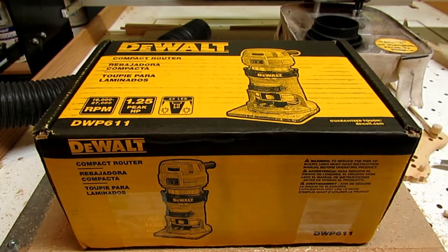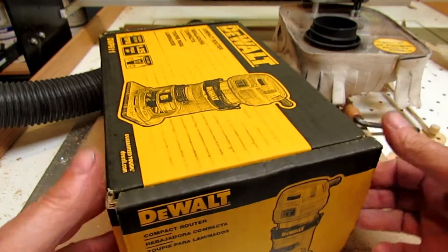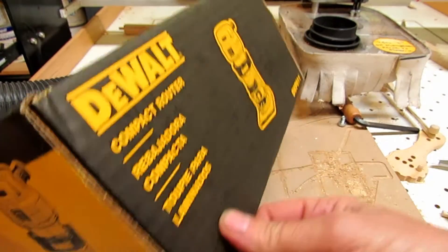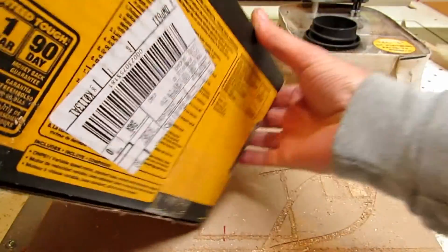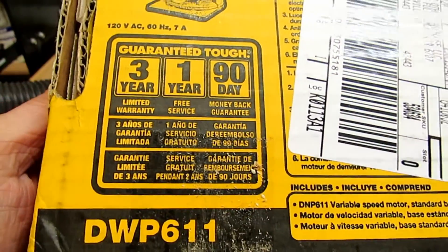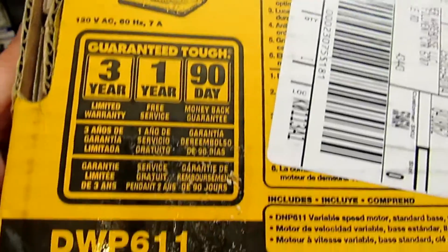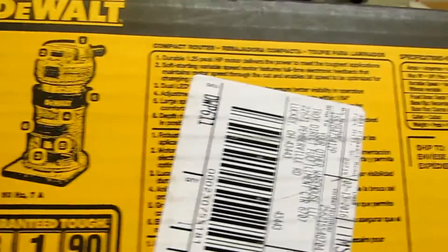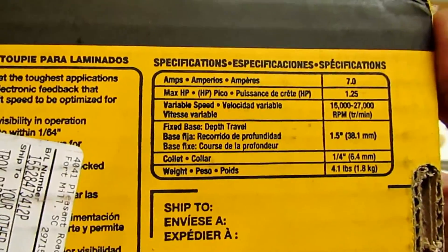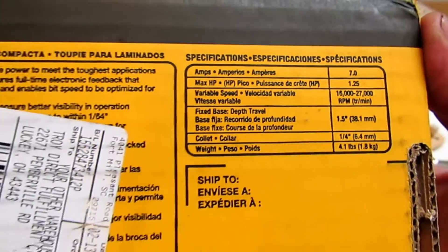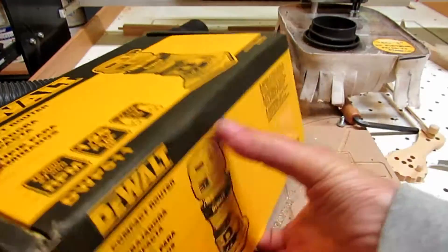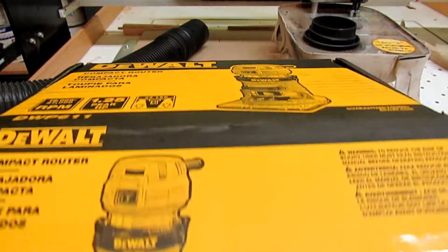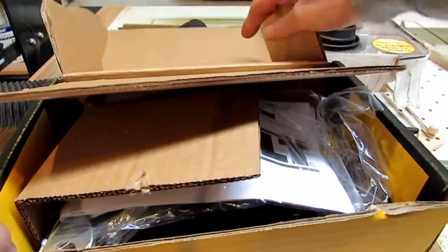I wanted to replace that with a CNC spindle, but there just wasn't enough money in the budget this month to do that, so I decided to order one of these DeWalt DWP-611s that I've seen online that many people have had good luck with using on a small CNC router. This is kind of what I had to go through to retrofit it onto my machine.